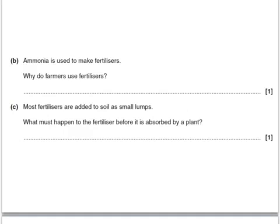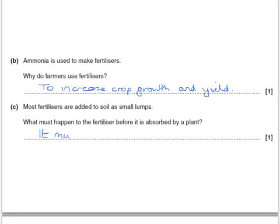Here's a question about fertilizers. Ammonia is used to make fertilizers. Why do farmers use fertilizers? They use it to increase crop growth and yield. And most fertilizers are added to soil as small lumps — what must happen to the fertilizer before it's absorbed by the plant? It must dissolve.